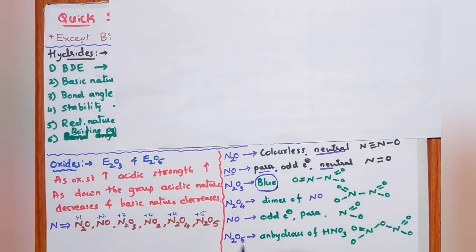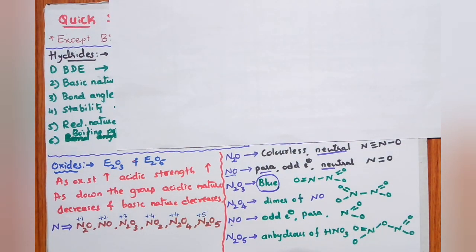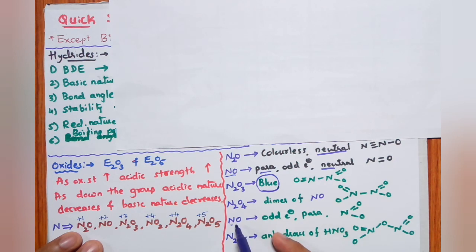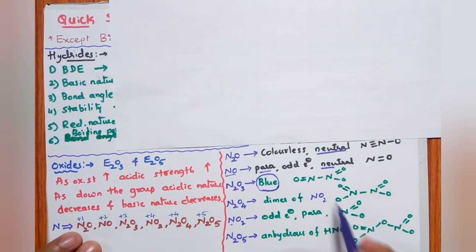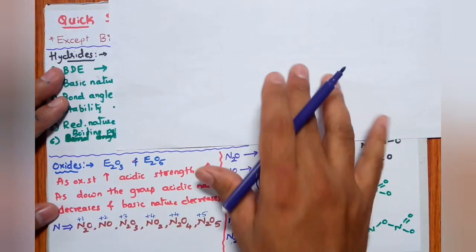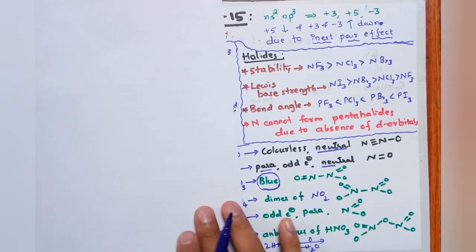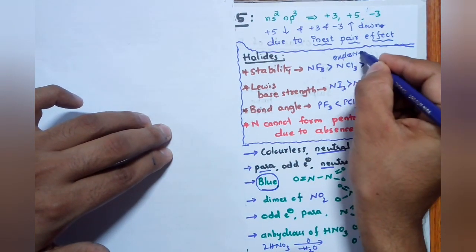N2O3 is blue in color — the only blue-colored nitrogen oxide. N2O4 is a dimer of NO2, because NO2 is an odd-electron molecule and can undergo dimerization. N2O5 is the anhydride of HNO3: take two molecules of HNO3, remove one water molecule, and the remaining compound is N2O5.